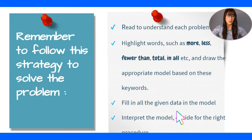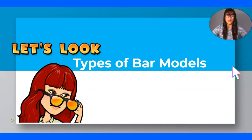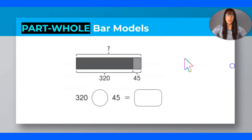Then you will interpret the model and decide on the right procedure — you'll know if you need to add or subtract depending on the formula. Now let's look at the types of bar models you can run into when reading real world problems. The first one is the basic part-whole bar model. It will look like this.